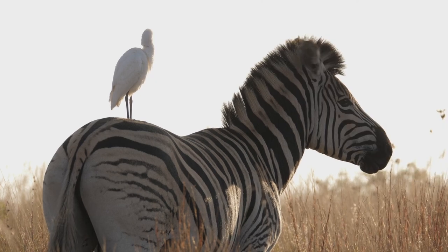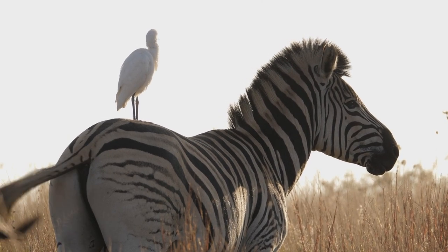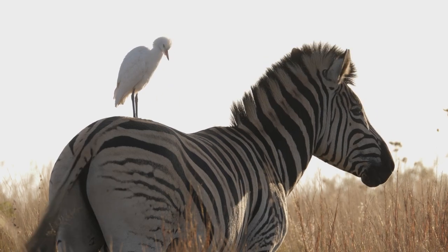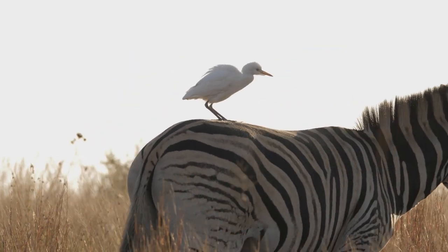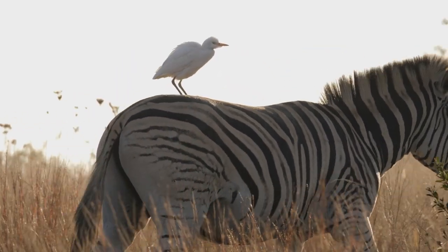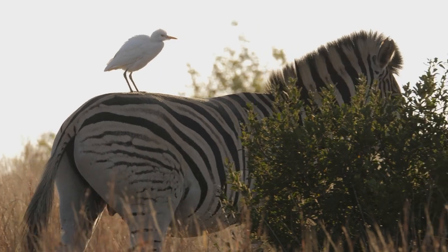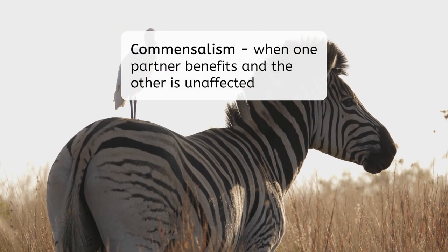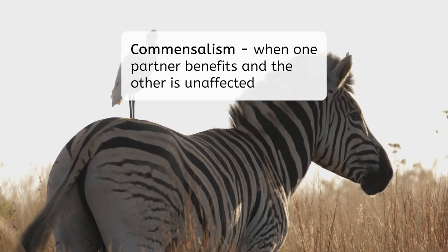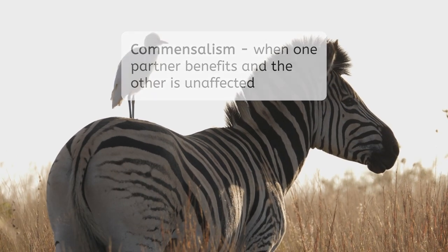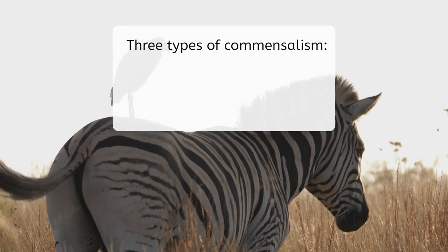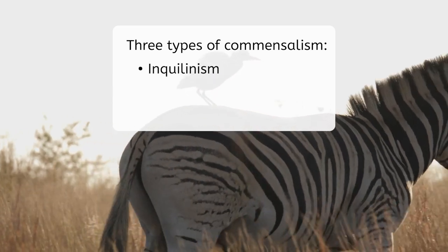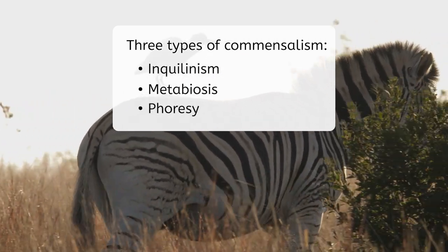Check out that heron hitching a ride on the zebra's back — it's nature's carpool. The zebra doesn't seem to mind at all and the heron gets a free ride. This is an example of commensalism, where one partner benefits while the other is unaffected. There are three types of commensalism: inquilinism, metabiosis, and phoresy.